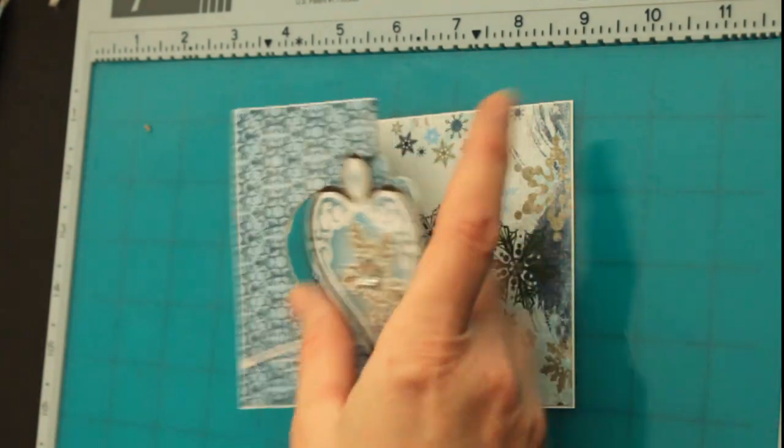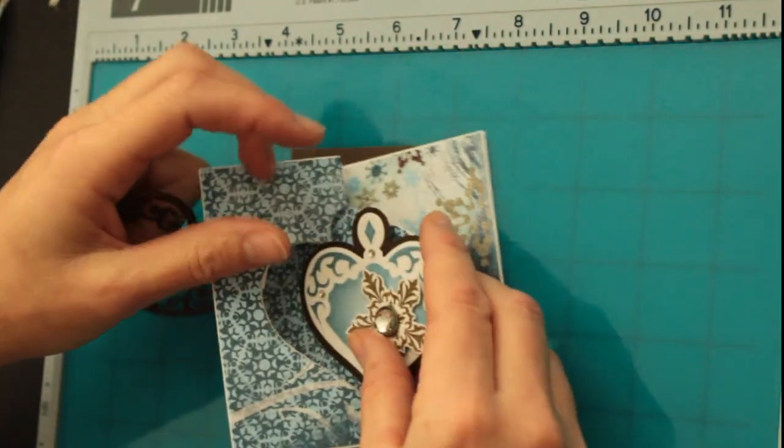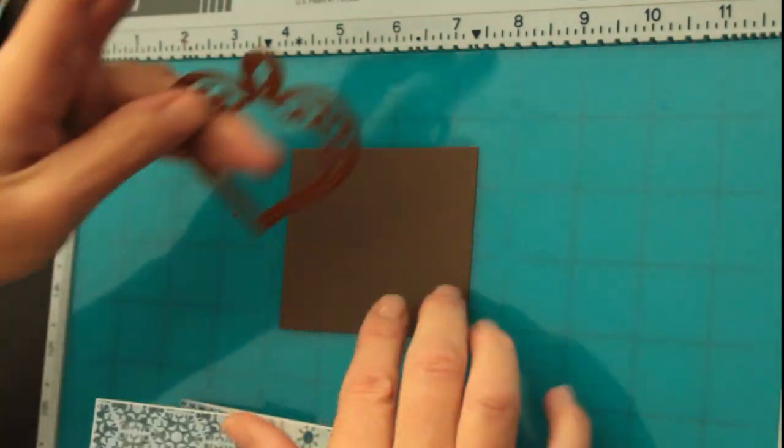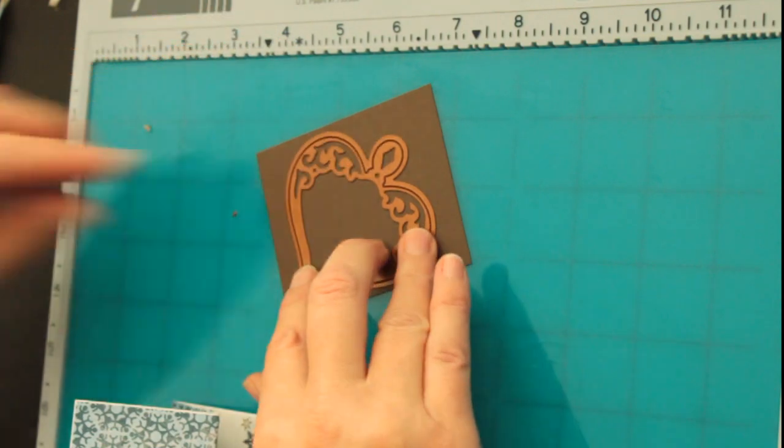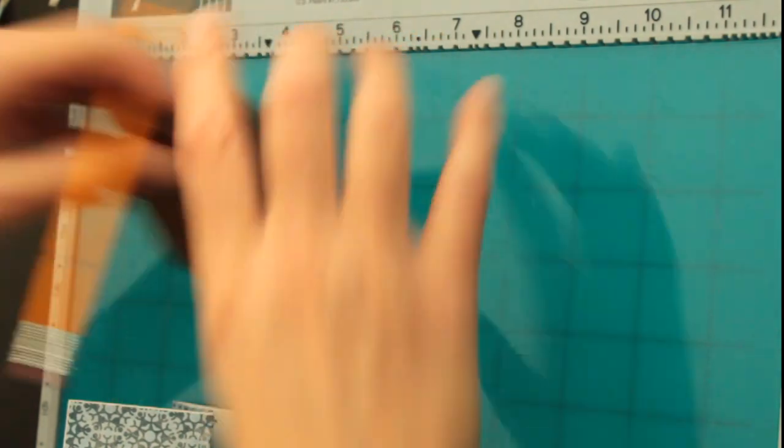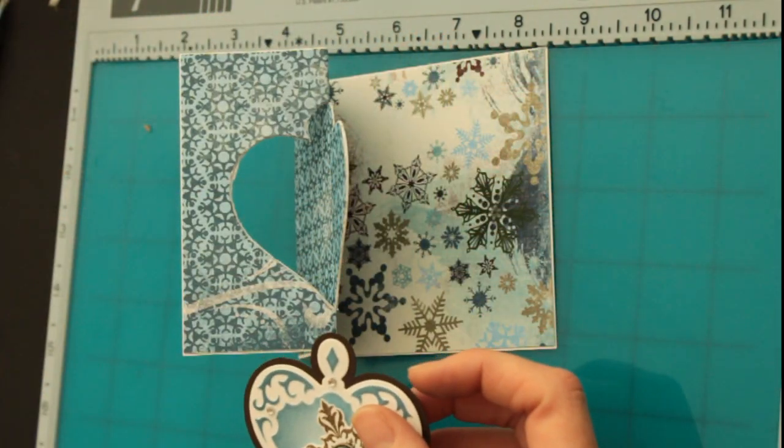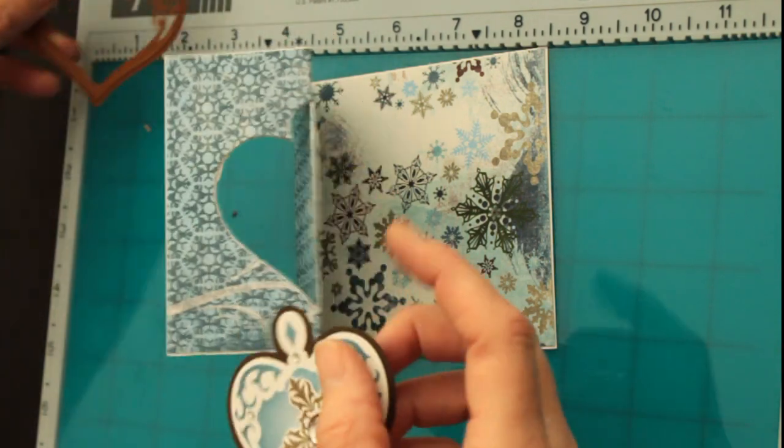And I already prepared my card front piece. And all you do is take your die again. If you want to have a piece underneath that is the same shape that you cut. And lay it on a piece of cardstock, trace it and cut it out. And I had already done that.